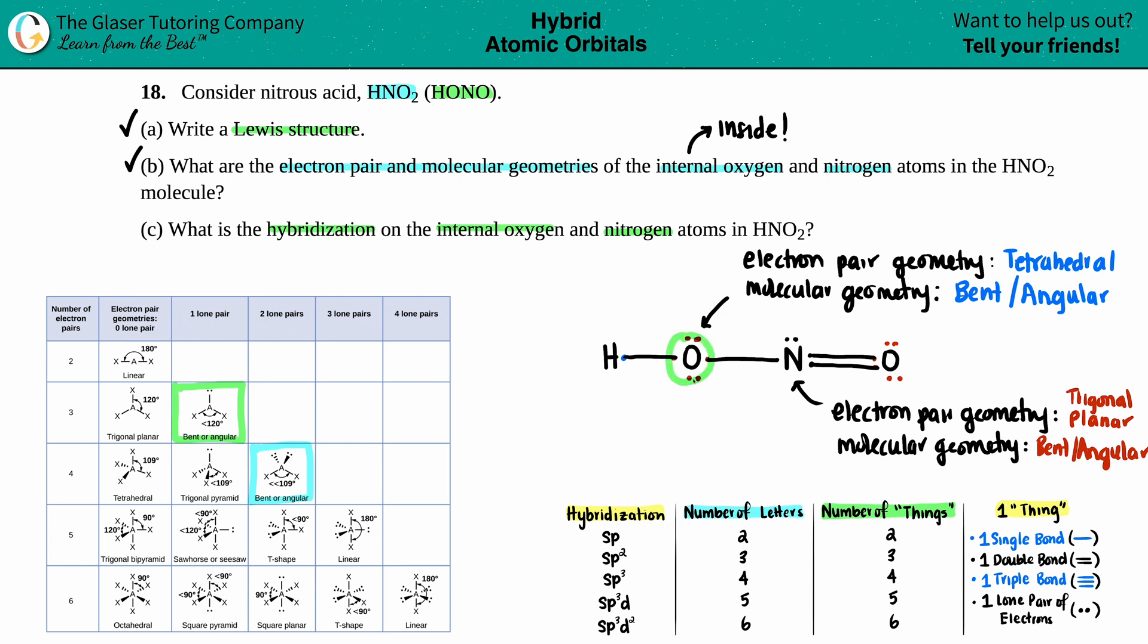So for the oxygen, how many things are around the oxygen? Well, this oxygen, the internal one has one single bond. That's one thing. It's got another single bond. That's two things. It's got one lone pair. So that's three things and another lone pair. That's four things. So in this case, for the oxygen, you have four things that corresponds to four letters. So in this case, the oxygen has SP3 hybridization.